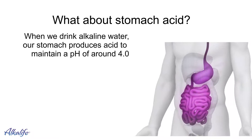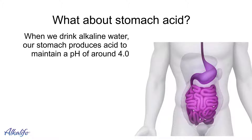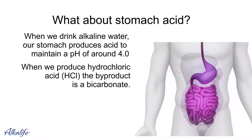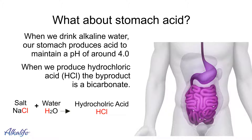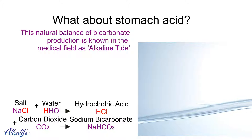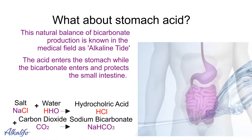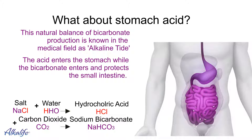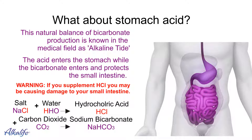So what about stomach acid? When we drink alkaline water, our stomach will produce acid to maintain a pH of around 4.0. But when we produce hydrochloric acid, the byproduct is a bicarbonate. Look at salt and water — sodium chloride and H2O. We can take the chloride and the hydrogen and form hydrochloric acid, but the leftover is sodium, one hydrogen, and one oxygen. Combined with carbon dioxide, they form sodium bicarbonate. This natural balance of bicarbonate production is known in the medical field as alkaline tide. The acid enters the stomach while the bicarbonate enters and protects the small intestine. However, if you supplement HCL, you may be causing damage to your small intestine because you're only getting half of that equation.